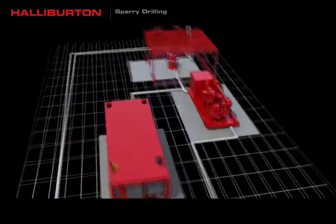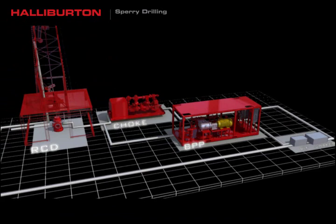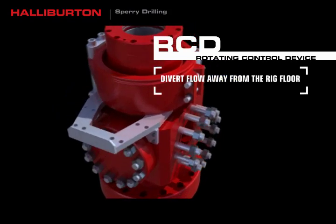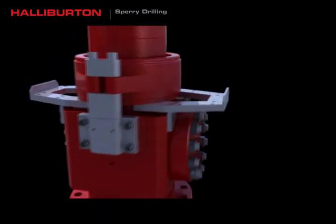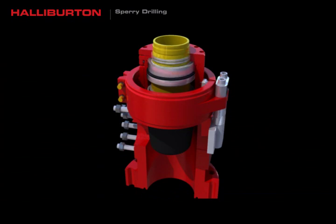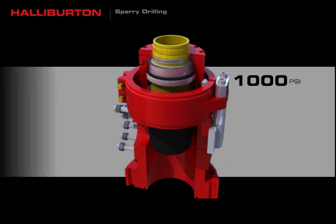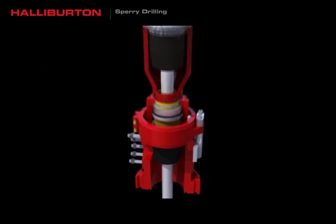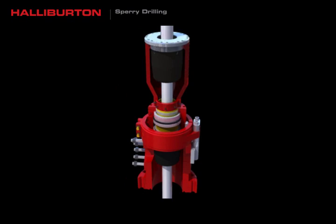A typical managed pressure drilling system contains several key components. The rotating control device is an essential part of every MPD system that serves to divert flow away from the rig floor. It complements the rig's standard blowout preventer stack, forming a friction seal around the drill pipe or Kelly, creating a closed loop drilling system. Halliburton offers rotating control devices rated to static pressures of 1,000, 2,500, and 5,000 PSI. Their compact design ensures they fit under most drilling rigs without modifications or jacking, allowing better maneuverability and faster rig-up times. For high pressure wells, we deploy rotating control devices with a dual stripper option that creates a secondary barrier for safer operations.